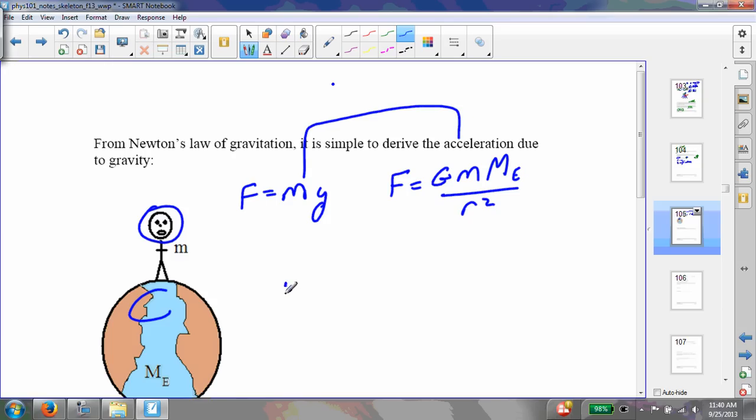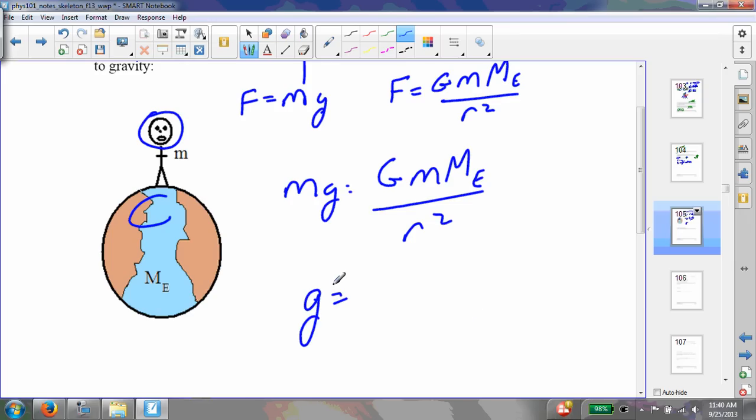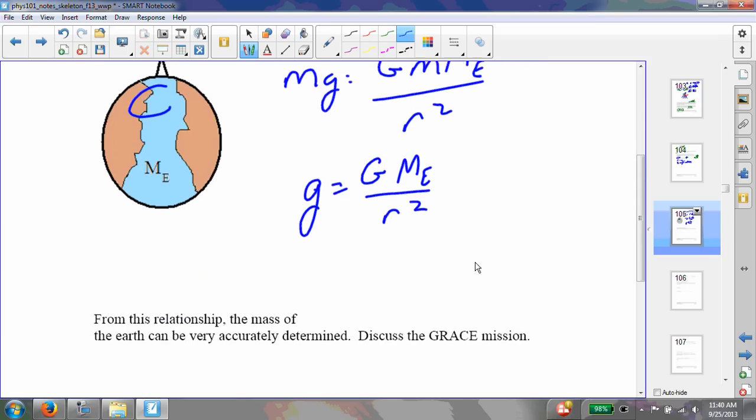And then if we set these two equal to one another and solve for g, we have a nice way to solve for the acceleration due to gravity that's only dependent upon the radius of the planet and the mass of the planet. Notice it's linearly related to the mass of the planet and inverse square relationship with the radius.